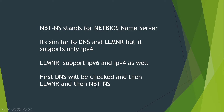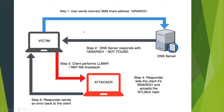Now let's see how we can poison LLMNR and capture the username and NTLM hash. Looking at this diagram: Step 1 — the victim machine sends an incorrect SMB share address. If a user misspells the share name, it will first query the DNS server. The DNS server responds that the share has not been found. Because of that DNS failure, the system broadcasts to all computers in the subnet — first checking the LLMNR cache, which also won't find it, so it performs an LLMNR or NBT-NS broadcast.